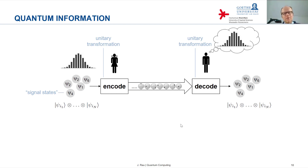It is this tensor product state that Alice wants to convey to Bob, and which Bob at his end wants to reconstruct — he also wants to have an n-partite composite quantum system in that tensor product state. Alice does this via a unitary transformation that maps this state onto a state of qubits which she sends to Bob, and Bob performs another unitary transformation mapping the qubit state onto the physical systems with the desired tensor product state.